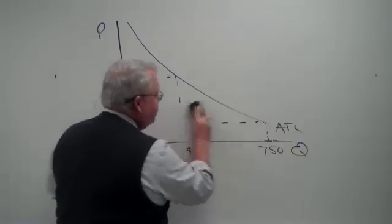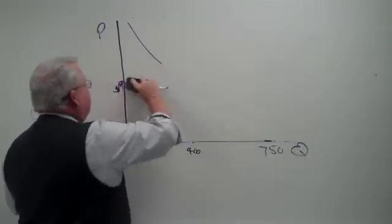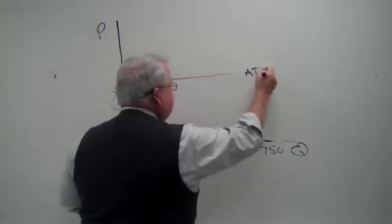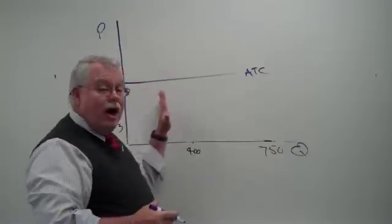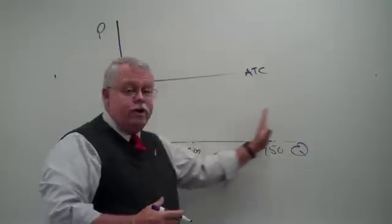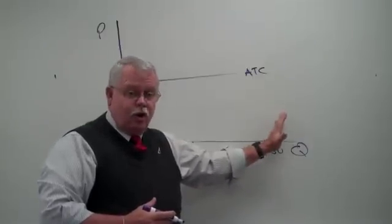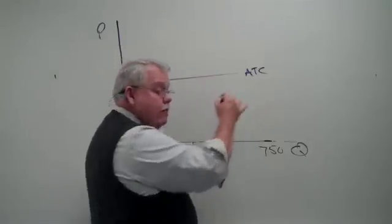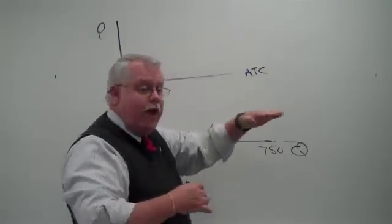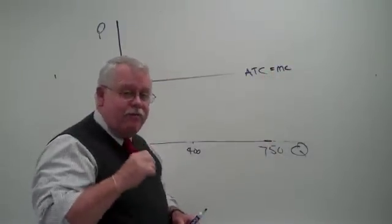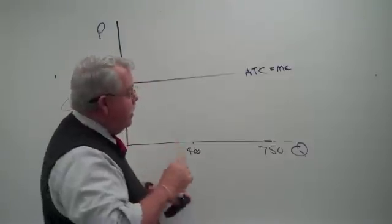One other example here. What would you think if you saw an average total cost curve like that? What is that? That is constant costs, the same cost per unit over the entire range of production. Constant costs. Now, parenthetically, and we'll see this more as we go along, when the average total cost curve is constant or flat, it is the same as the marginal cost curve. That's going to be very important to remember.